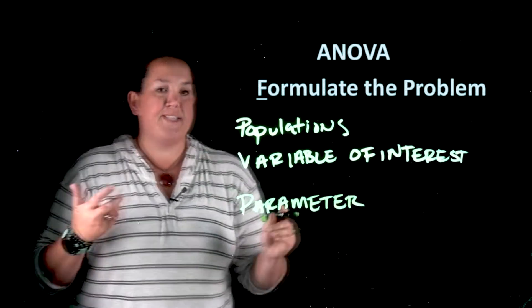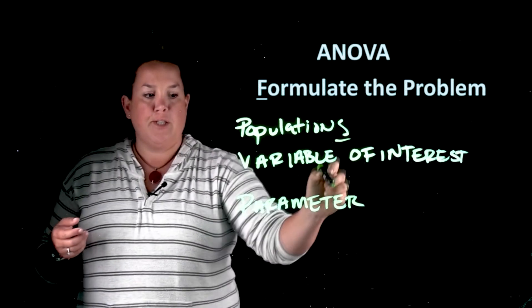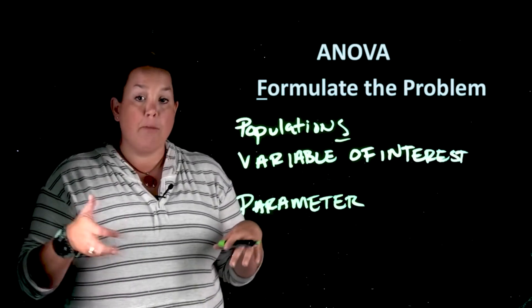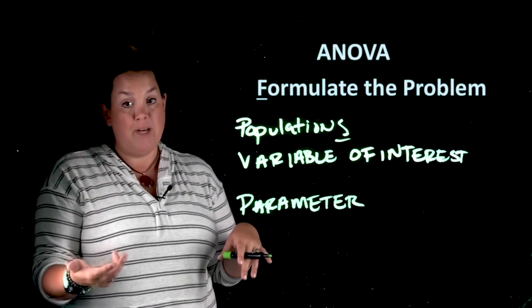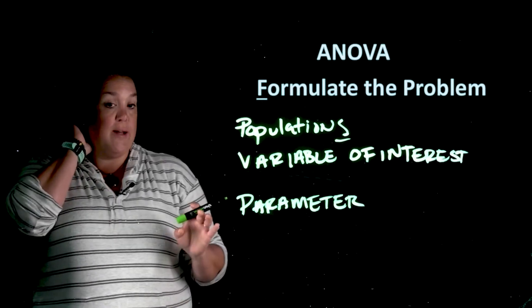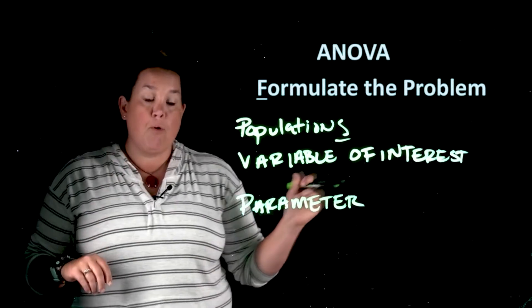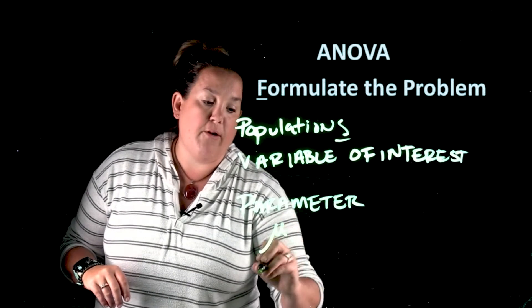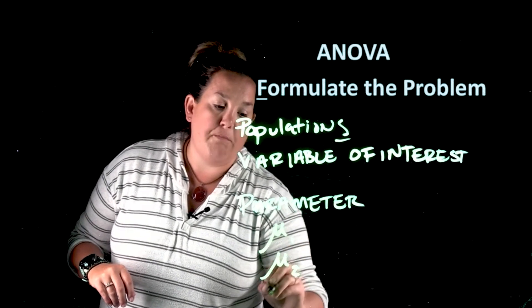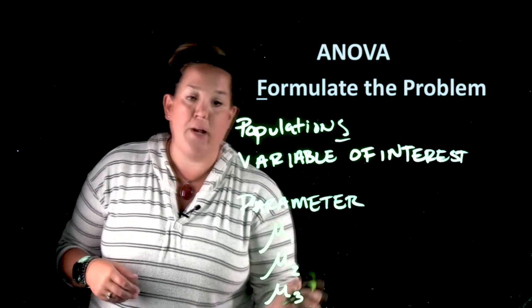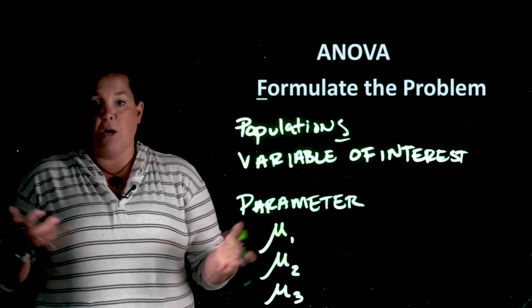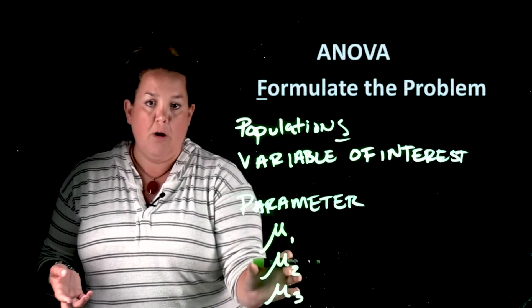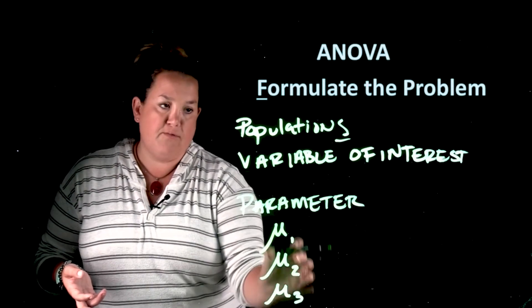Now if you heard me say populations, parameter definitions, with the ANOVA you're comparing multiple means. So it's usually at least three. So three or more means that you'll be comparing. So that means that you will have multiple mu's. So you might be defining three mu's. You might be defining five mu's. But essentially we've defined a mu before. So that's familiar.